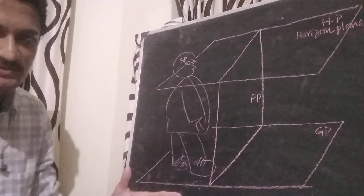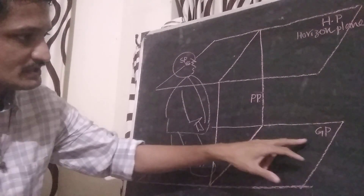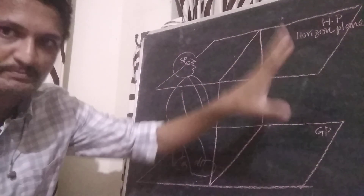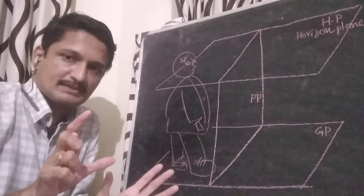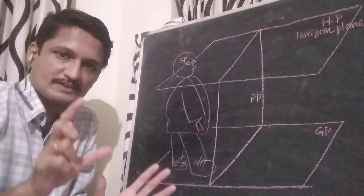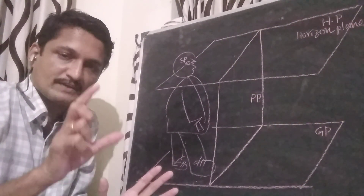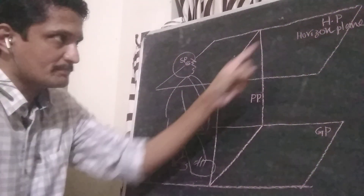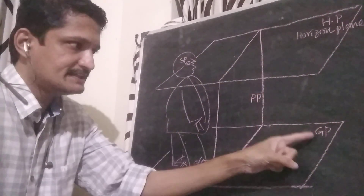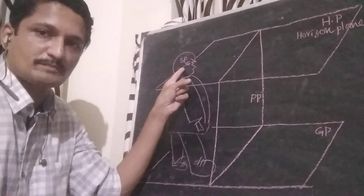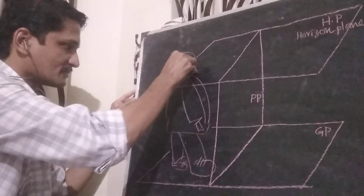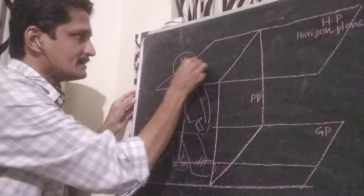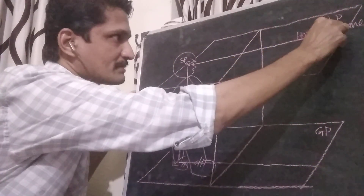Again, a plane which is perpendicular to GP, PP, and HP, and also passing through SP — the station point means the observer's eye. A plane which is perpendicular to HP, PP, GP and passing through SP — that plane is known as the central plane, CP.